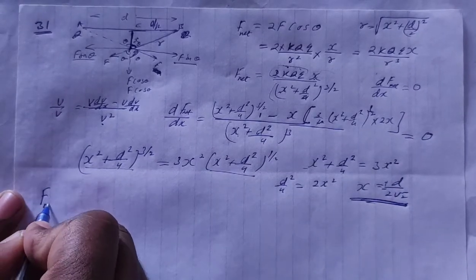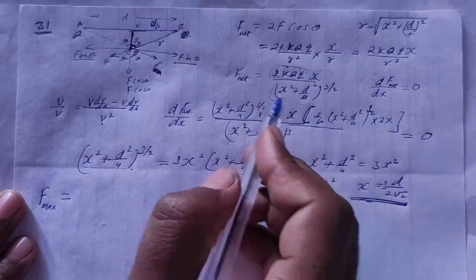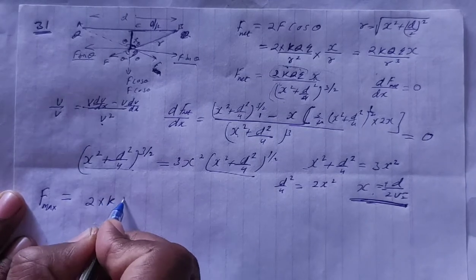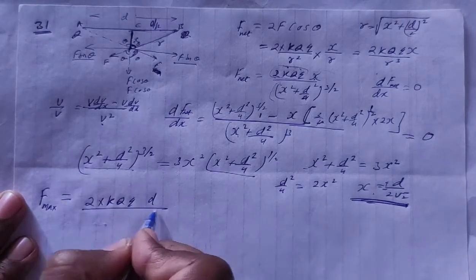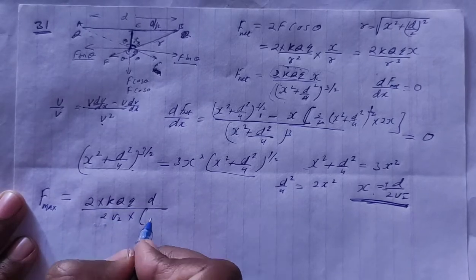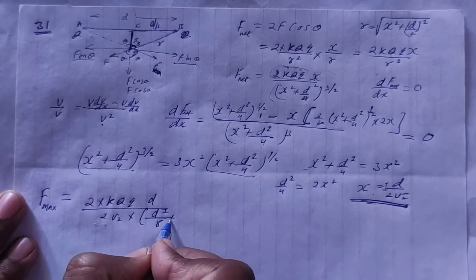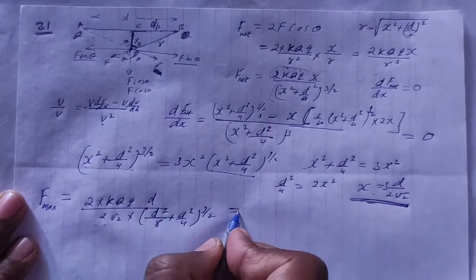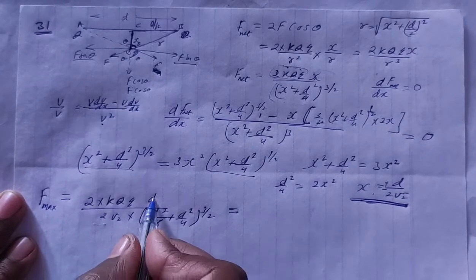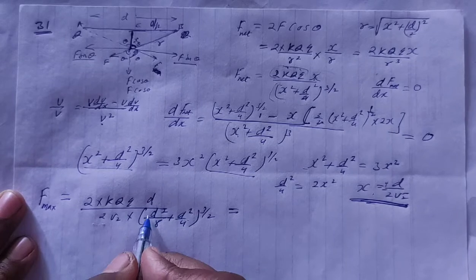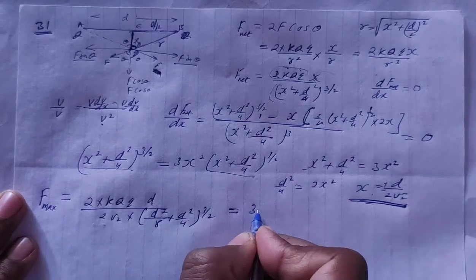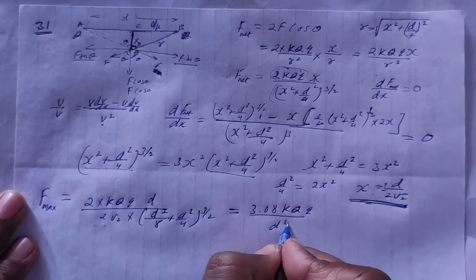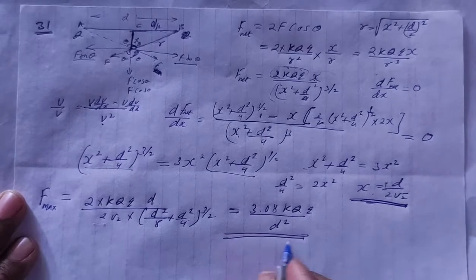Now putting x equals d/(2√2) into the F net expression: F max equals 2kQq times (d/2√2) divided by ((d/2√2) squared plus d squared/4) to the power 3/2. Solving this gives the maximum force as (3√3/8) times kQq divided by d squared. That is your final answer for the maximum force.